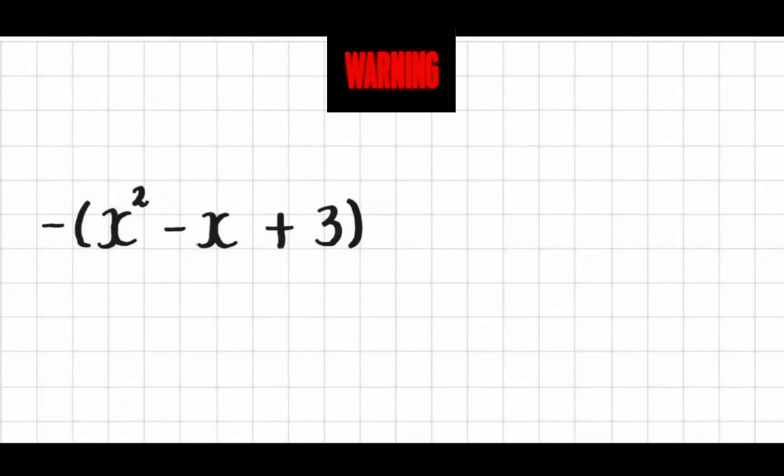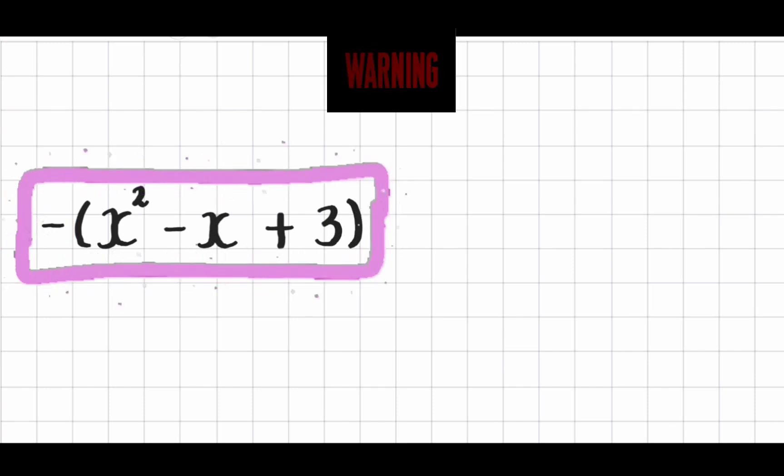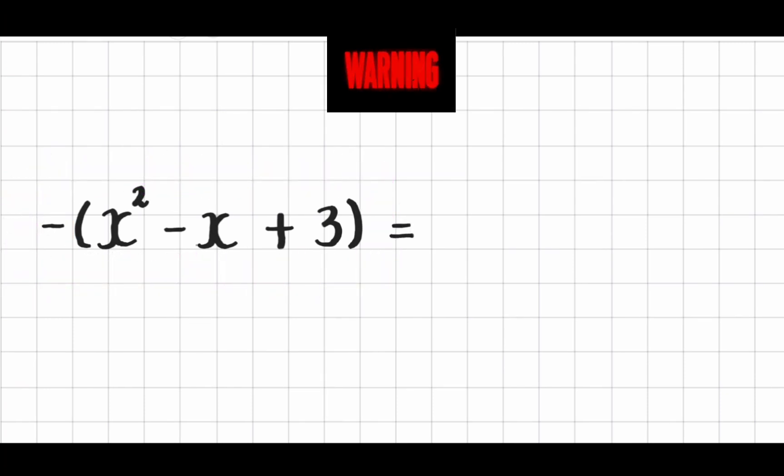Warning. When an expression inside brackets is preceded by a negative sign, remember to distribute the negative sign to each term inside the brackets. Negative of x squared minus x plus 3 equals negative x squared plus x minus 3.